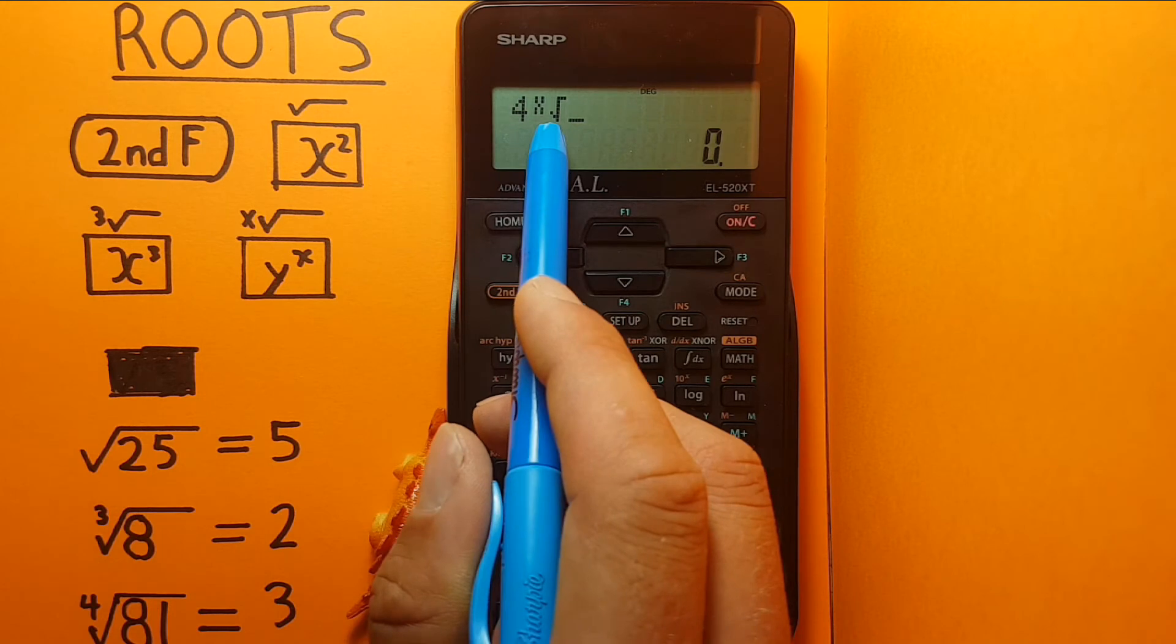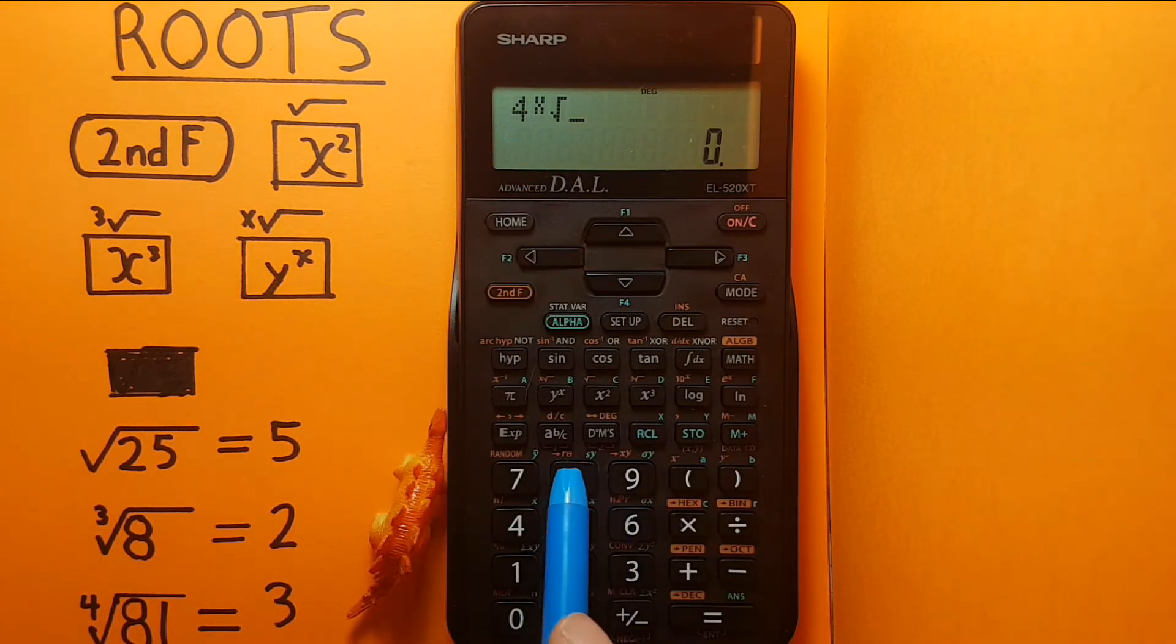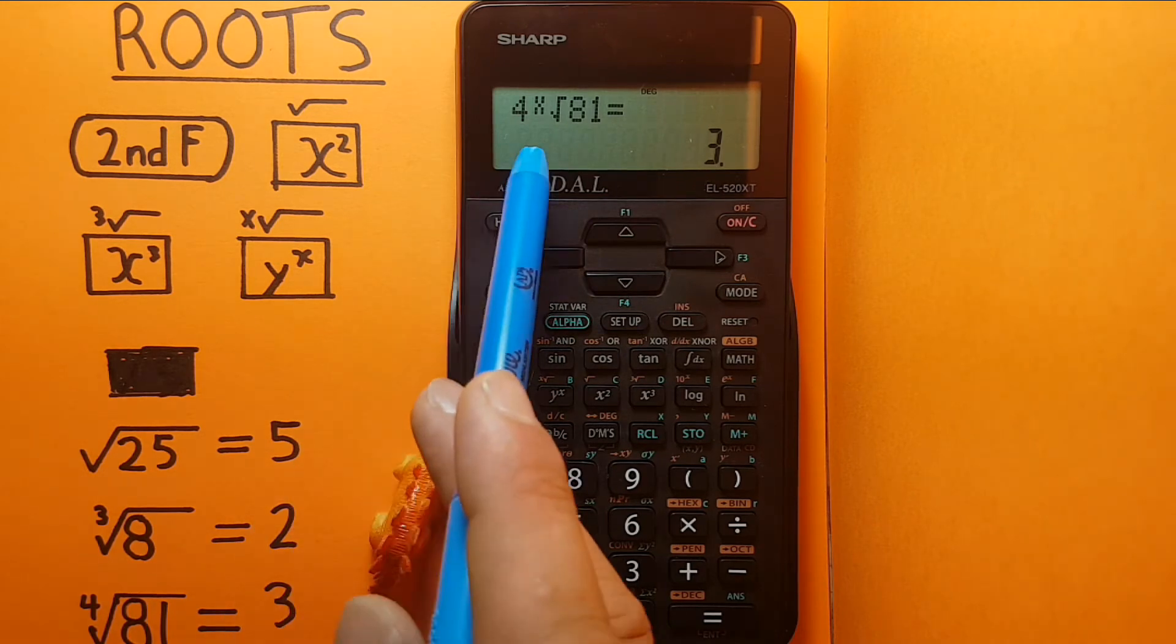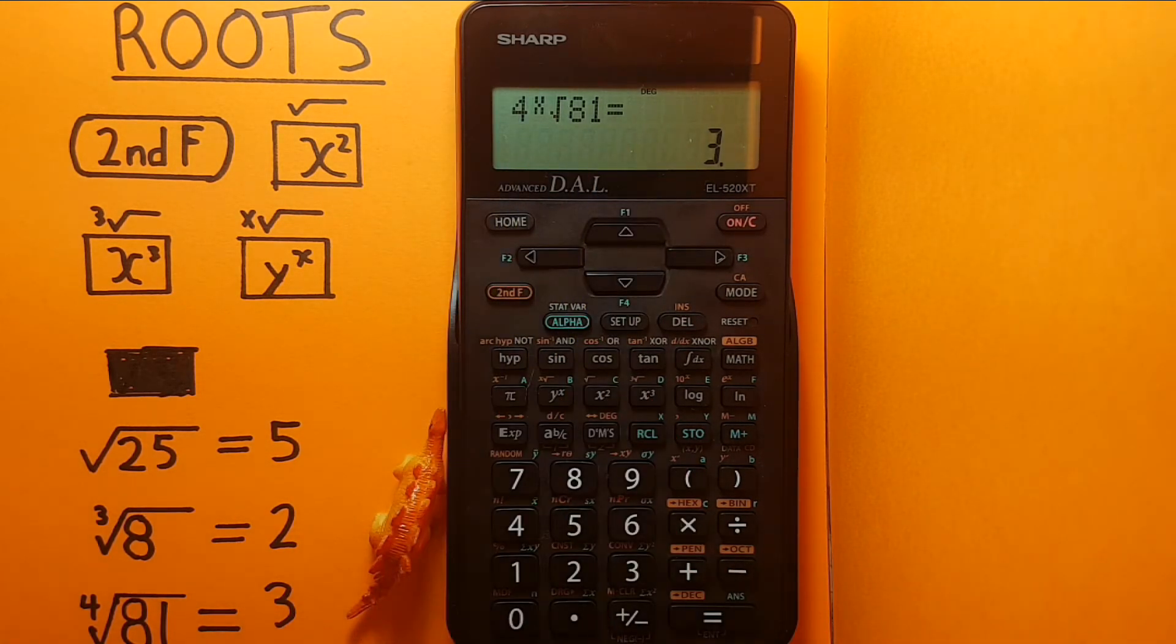See 4x root there. Enter the 81 and press equals. There we have the fourth root of 81, which is 3.